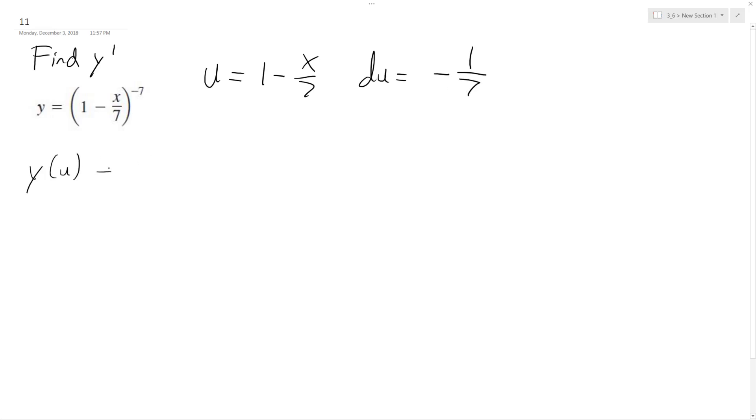So y of u is equal to u raised to the negative 7, and y prime of u is going to be equal to negative 7 u raised to the negative 8 du.